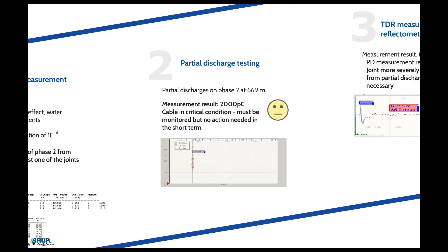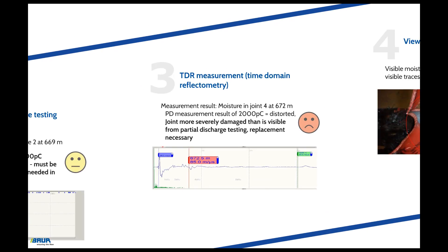In our example, the dissipation factor measurement shows a deviation of phase 2 from the normal value, which leads to the conclusion that there is moisture in at least one of the joints. The subsequently performed partial discharge testing identifies partial discharges on phase 2 after a length of 669 m. The partial discharge level of 2000 pC leads to the conclusion that the cable is in a critical condition, but the results of the partial discharge testing do not necessitate immediate action. Only by overall consideration of the results together with the dissipation factor measurement can the condition of the cable be determined. The TDR measurement, which is also used for the location of damp joints, shows that the moisture in joint 4 lies at 672 m. The fault location identified in the example coincides with that from partial discharge testing.